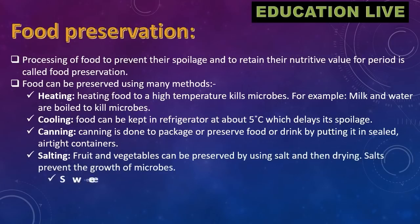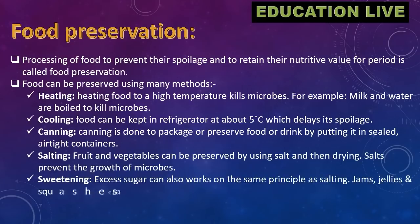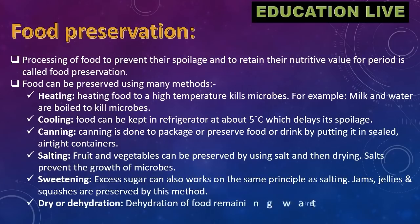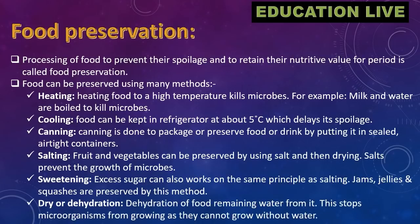Canning is done to package or preserve food or drink by putting it in sealed, airtight containers. Salting: fruit and vegetables can be preserved using salt and then drying. Sweetening: excess sugar works on the same principle as salting. Jams, jellies, and squashes are preserved by this method.